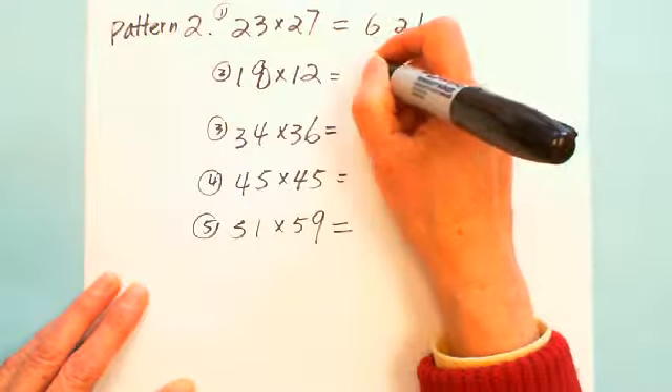And the same pattern. 18 times 12, 1 times 2 is 2, need to multiply 1 more, is 2. So 2 times 8 is 16. 2, 16. 34 times 36, 4 times 6 is 24, 3 times 4 is 12. 1224. 45 times 45 is 25, 4 times 5, 1 more is 20. 2025. 51 times 59 is 9, 09, and 5 times 6 is 30. 3009.